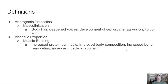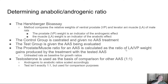Now that we've established those definitions, let's dig into how these ratings are figured out. The method used to determine the androgenic-to-anabolic ratio is called the Hershberger bioassay. It compares the relative weights of the ventral prostate and the levator ani muscle of a male rat.